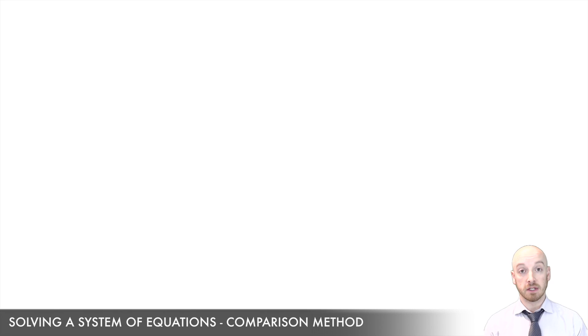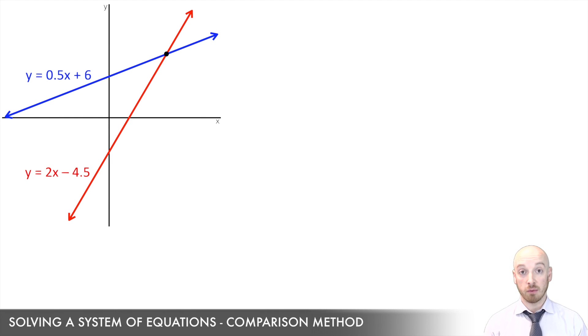Now we know what the solution to a system of equations is. We saw that in the last video. The solution is the point where I've got an x-y pair that works in two different equations and keeps them both balanced. Now the comparison method is used to find the point in two different equations where an x and a y value can be plugged in and it'll work for both of those equations.